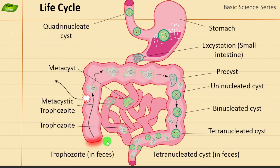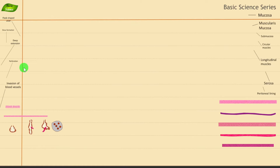In the pathogenesis of Entamoeba histolytica, you can see there is damage going on in the intestine. When trophozoites are released they are going to cause damage to the intestine, and a lot of complications can happen. I will be explaining those things in today's video. So let's move on and I'll explain these things one by one — what are the different parts and what are their functions.